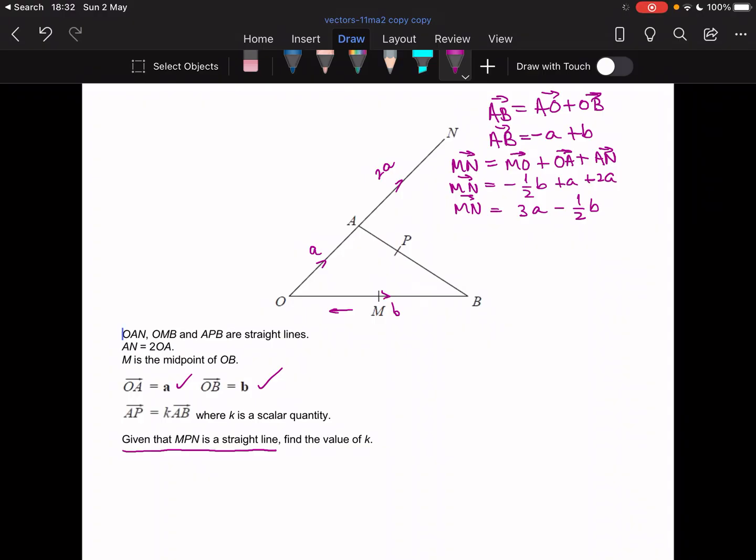Now let's work out MP. So MP is equal to MO plus OA, and in this case plus AP. And the question is telling us that AP is kAB. So I'm going to start putting in some a's and b's. So MO, as we said before, that's minus half b.